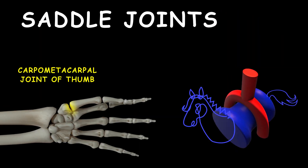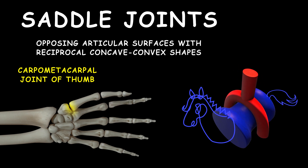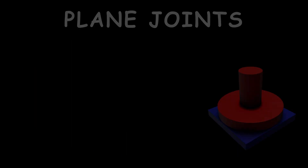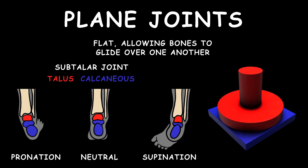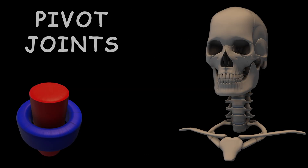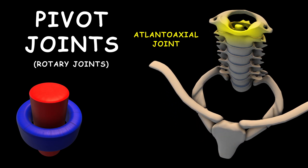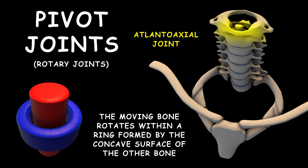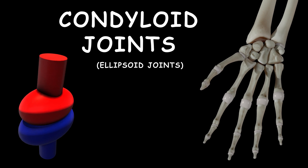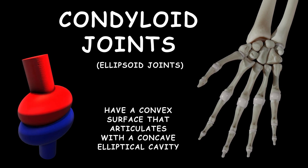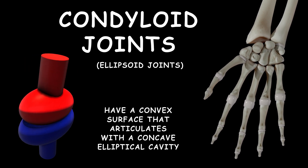Saddle joints, such as the carpometacarpal joint, have opposing articular surfaces with reciprocal concave-convex shapes. Plane joints, such as the subtalar joint, are flat, allowing bones to glide over one another. Pivot joints, or rotary joints, such as the atlantoaxial joint, only allow rotation — the moving bone rotates within a ring formed by the concave surface of the other bone. Condyloid joints, also called ellipsoid joints, such as the wrist joint, have a convex surface that articulates with a concave elliptical cavity.